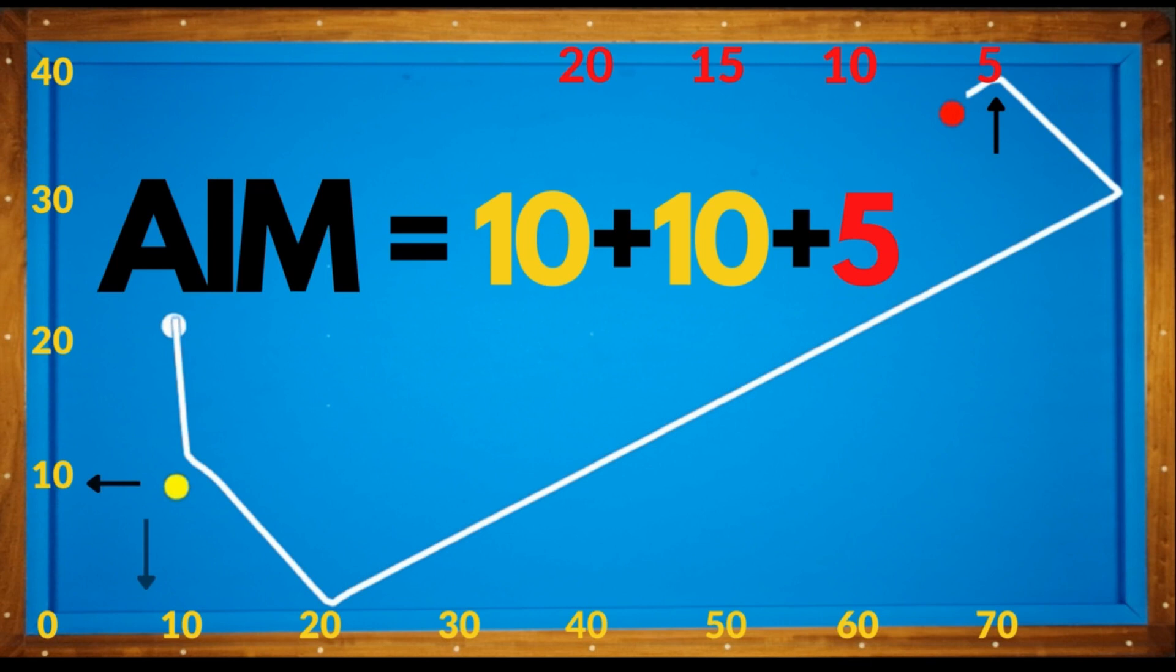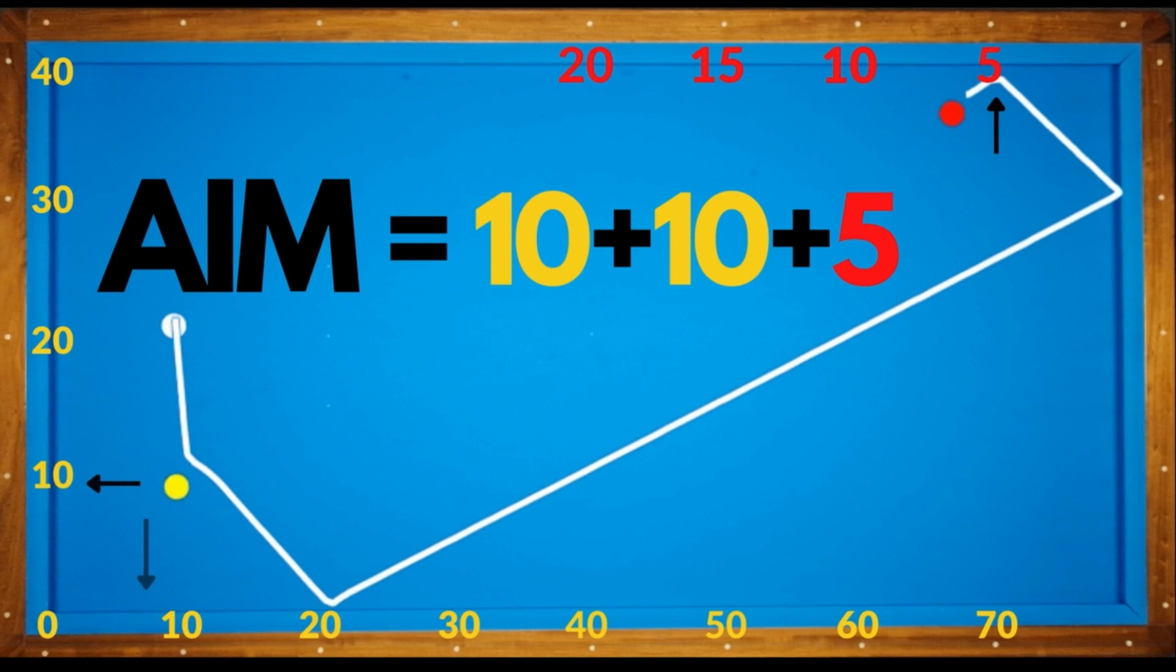According to yellow and red ball positions, we add all the points. It gives us the aiming direction of the cue ball. I will use left side spin for all positions. Let's make more examples.